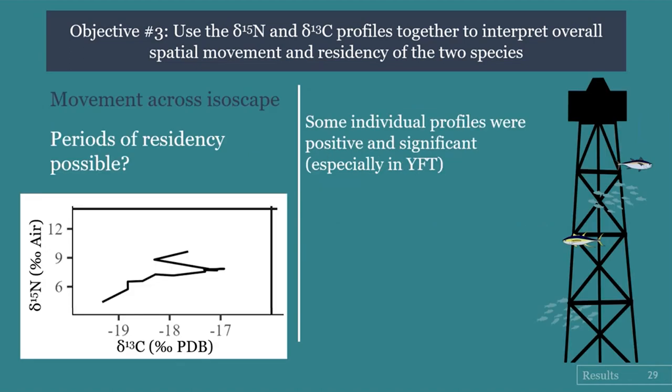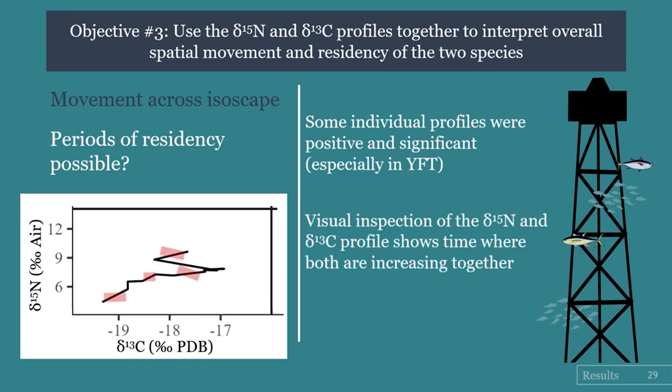However, there is still the possibility of periods of residency for these fish. Some individual profiles were positive and significant, especially in yellowfin tuna. Looking at each individual's delta nitrogen and delta carbon profile, you can see times where both are increasing together, indicating the potential for periods when the species are remaining in one area for a good amount of time.